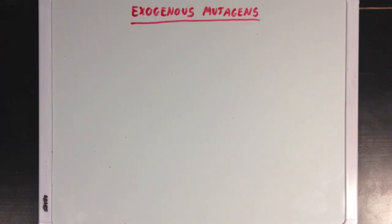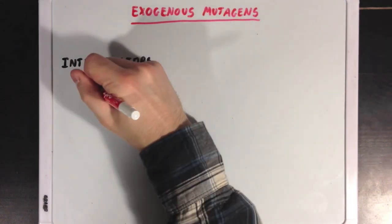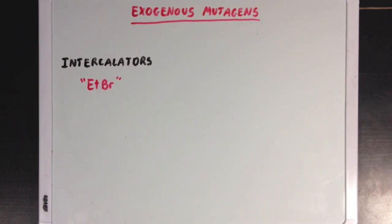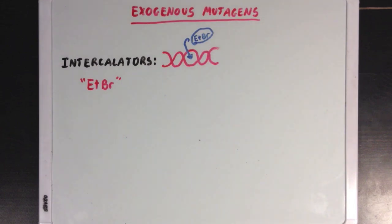Now let's look at a couple of examples of exogenous mutagens. Intercalators are one example, and one of them is called ethidium bromide, which you may be familiar with from PCR experiments. Ethidium bromide will jump into a DNA double helix and stick itself between the two strands. When intercalators intercalate into DNA, they can deform the structure of the DNA and cause serious problems.